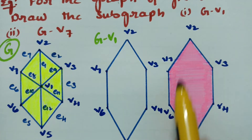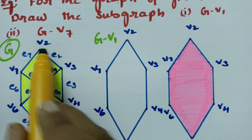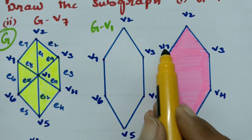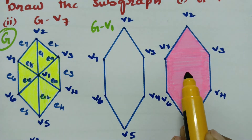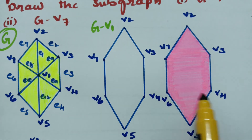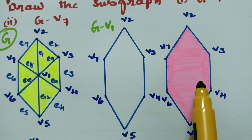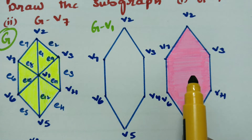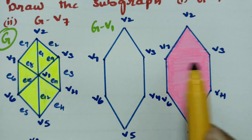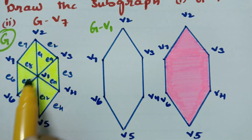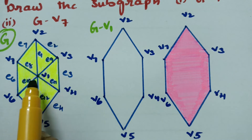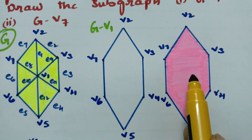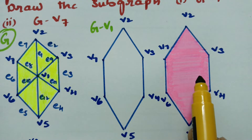So here is the new graph after removing V1 and all edges incident with it. In this graph we have the remaining vertices: V2, V3, V4, V5, V6, and V7. Only V1 is missing, along with all the edges that were incident to V1. This fresh graph is the vertex deleted subgraph G minus V1.